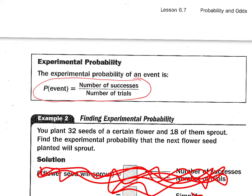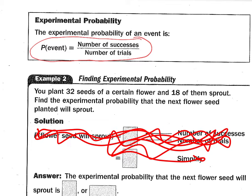The experimental probability of an event is the number of successes over the number of trials. So when I was talking about three out of 25 of my edamame grow, it would be three successes out of 25 trials. The next one I choose to plant, the probability should be the same based on my experiment.